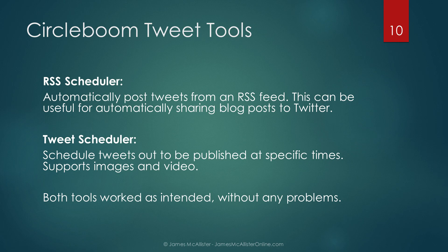Circle Boom's Smart Tweets is a collection of tools centered around tweets themselves. They contain an RSS publisher and a tweet scheduler. The RSS publisher allows you to automatically share posts from trusted sites you follow, with your own text either before or after the article name and link — for example, tagging the person in the tweet so they know you shared it. You can also use this to automatically share your own blog posts. The tweet scheduler lets you write a tweet in advance and have it posted at a specific time, with photos and videos also supported. Both features seem to work well.